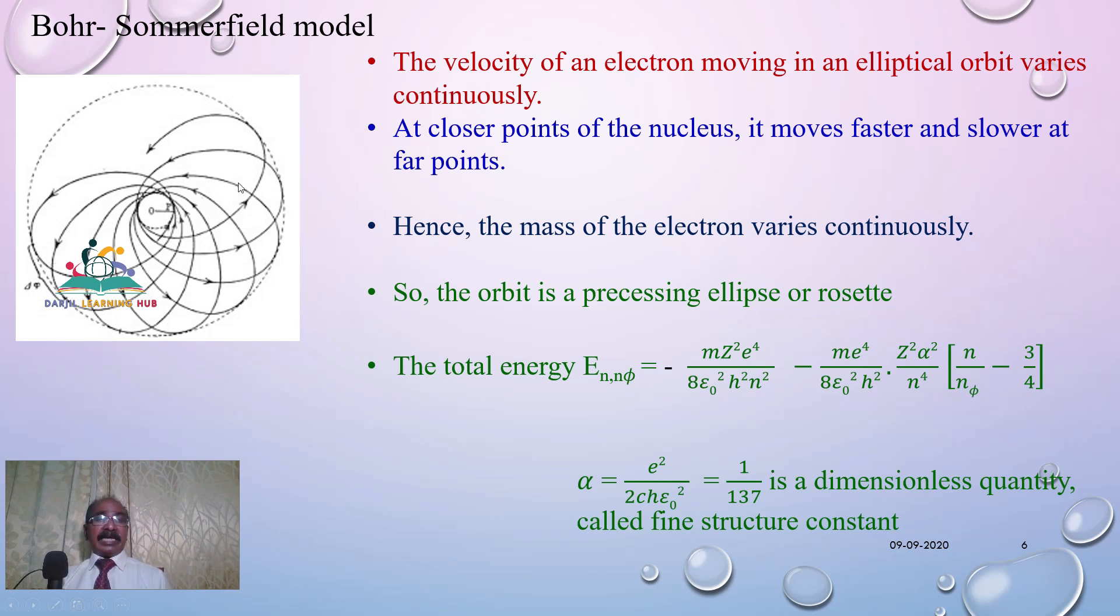The electrons will move a rosette motion in the atom like this. If that's to be the case, according to his concept, the total energy of the electron will be given by this formula, where α will be equal to 1 divided by 137, which is a dimensionless quantity. And this α is called the fine structure constant. In this manner, Sommerfield had proposed his new atom model.